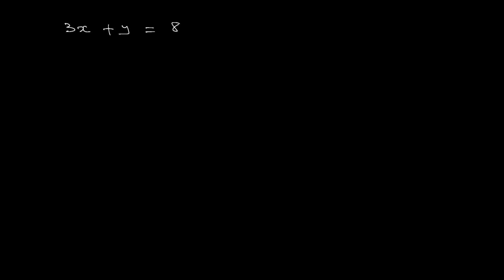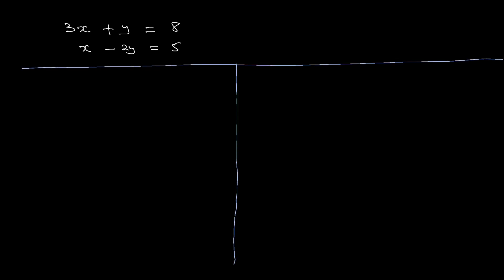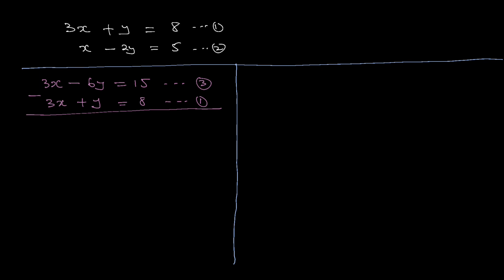Let's do an example with the linear system: 3x plus y equals 8, and x minus 2y equals 5. There are two ways to solve this — simultaneous equations or matrices. Using simultaneous equations: multiply equation two by three to get 3x minus 6y equals 15. Subtract equation one from this: 3x minus 3x is zero, minus 6y minus y is minus 7y equals 15 minus 8 equals 7. Divide by minus 7: y equals minus 1.